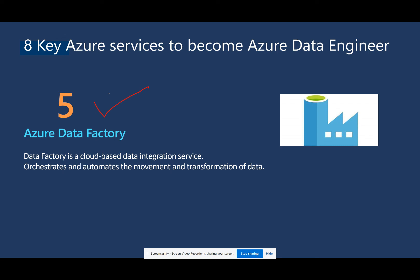The fifth service is Azure Data Factory, which is used to migrate data from on-prem to the Azure platform using a self-hosted integration runtime. It is also used to build batch data pipelines and to integrate with other Azure services — for example, calling Databricks notebooks or stored procedures. We can orchestrate end-to-end workflows, automate by scheduling jobs, and perform various data transformations using Data Flow.